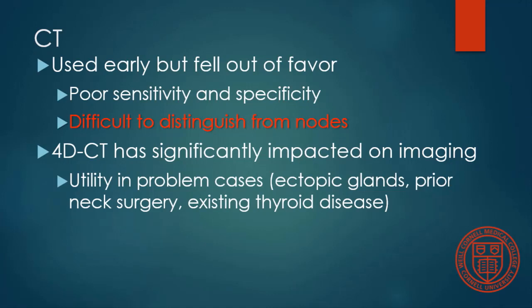CT was used early but fell out of favor — with 7 to 10 mm thick slices it was hard to see these small lesions and difficult to distinguish adenomas from lymph nodes. Our current era with multi-detector CT, and more importantly 4D CT, has significantly impacted imaging of parathyroid disease. It demonstrated utility early on with problem cases and is now used at many sites as a primary imaging modality.